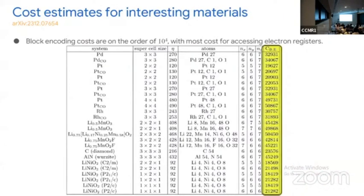For a few interesting materials, the key column is on the right: costs for block encodings in terms of Toffoli counts. There's a range of roughly 20,000 to 50,000 Toffolis. For a lot of these, much of the cost is just for accessing the registers with the electron momenta. This tells us we've optimized the evaluation of the pseudopotential functions as much as is reasonable to give the best performance.